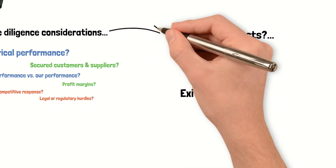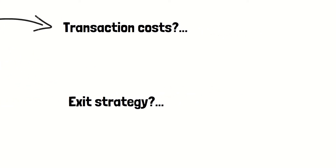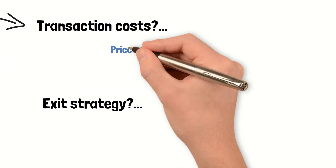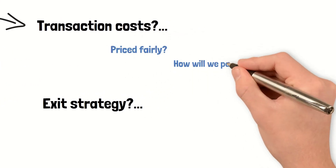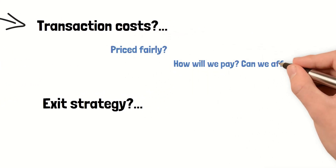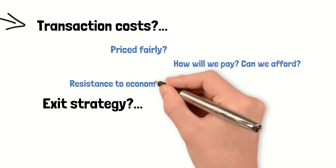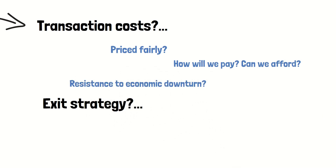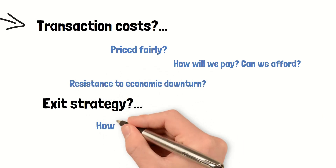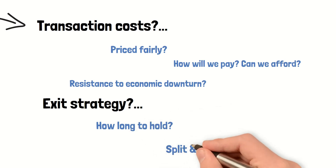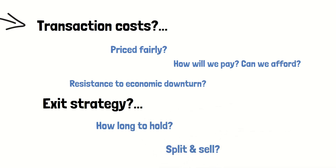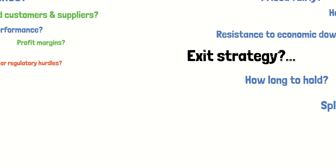Then we need to consider the price we will pay for this transaction. Is it a fair price? How are we going to pay for it, and can we afford it? And can they survive any unforeseen economic downturns? Lastly, evaluate and hypothesize potential exit strategies. How long are we going to hold this company for? Or are we just trying to split it up and sell it as pieces?